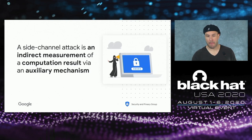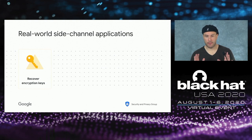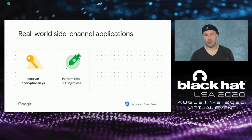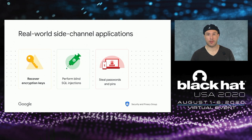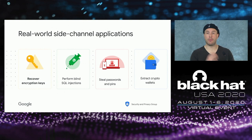A side-channel attack is basically an indirect measurement of a computational result, done through an auxiliary mechanism. It's used to recover encryption keys, perform blind SQL injection, steal passwords and PINs, and extract crypto wallet private keys. Basically, everything which is secret that you cannot observe directly but wish to recover can usually be targeted by a side-channel attack one way or another.